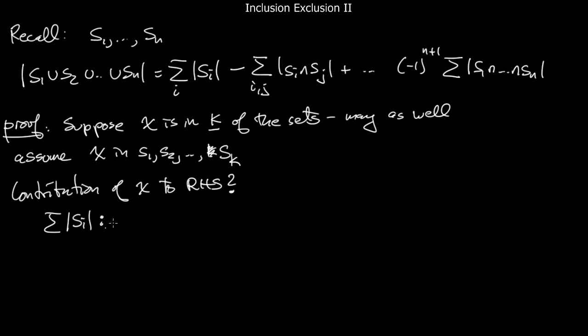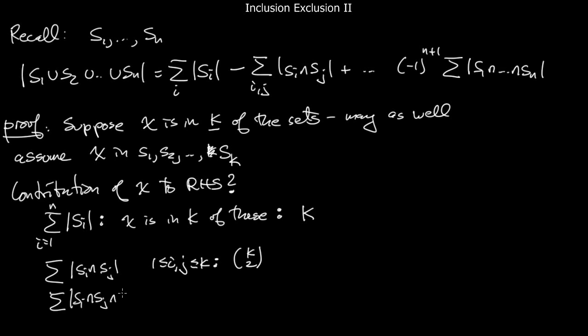From the summation of Si terms, it's going to occur in k of these, the first k terms. It's the sum from 1 to n, and the first k contain it. So, you get a contribution of k from this. Now, how about the second sum? Si intersect Sj. It's the pairs i and j, where i and j are between 1 and k, and there's k choose 2 of those. And similarly, there's k choose 3 triples of sets which contain x. So, the next term contributes k choose 3. And so, if you keep going like this, you see that the contribution to the right-hand side of this element x is k choose 1 minus k choose 2 plus k choose 3 and so on, down to plus or minus k choose k.